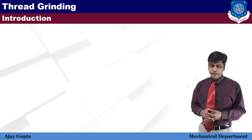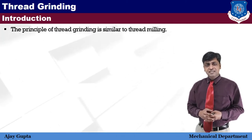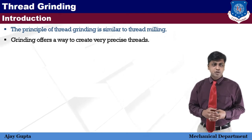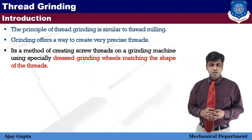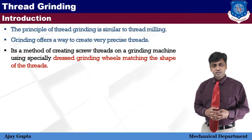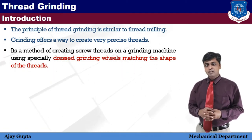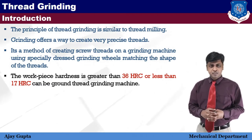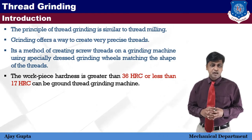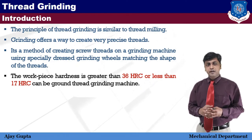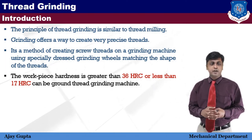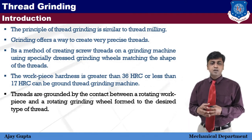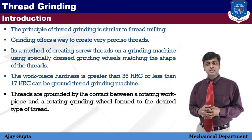The principle of thread grinding is similar to thread milling. Grinding offers a way to create very precise threads, which enables threads to be produced on hard materials. Thread grinding is a method of creating screw threads on a grinding machine using specially dressed grinding wheels matching the shape of the thread. It is considered the perfect method of threading when the workpiece hardness is greater than 36 HRC or less than 17 HRC — meaning very hard and very soft materials are threaded by this process. Thread grinding is also used for highly stressed parts subjected to fatigue failure, such as heavy automotive components. Threads are ground by contact between a rotating workpiece and a rotating grinding wheel formed to the desired type of thread.